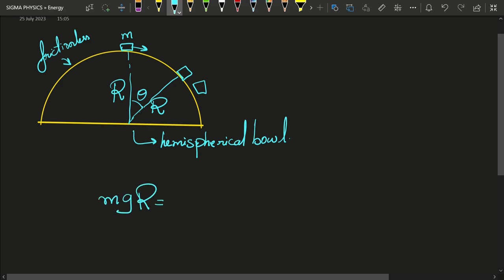And once it has covered some distance, that is at the point when it is going to lose contact with the bowl, its height from the ground is this, which is r cos theta. So we are going to have mgr is equal to mgr cos theta plus half mv squared.